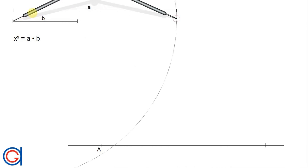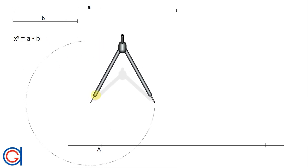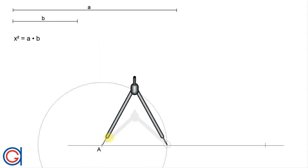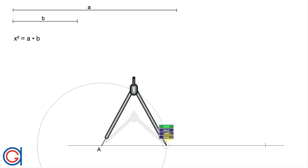Now we're going to do the same process with the other given line B. Setting the compass to the length of the given line B, we're going to transport this onto the horizontal line. We will name these points C and B as can be seen here.